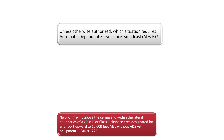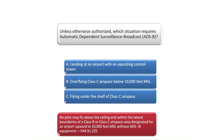Unless otherwise authorized, which situation requires Automatic Dependent Surveillance-Broadcast, ADS-B? No pilot may operate without ADS-B equipment above the ceiling and within the lateral boundaries of a Class B or Class C airspace area designated for an airport, upward to 10,000 feet MSL. The regulations regarding ADS-B equipment can be found in FAR 91.225.